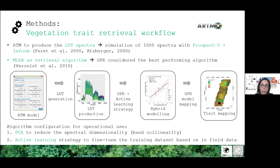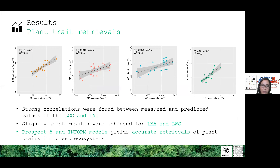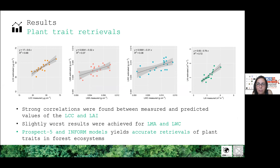We applied this workflow to estimate the four parameters mentioned at the beginning: leaf chlorophyll content, leaf mass area, leaf water content, and LAI. Scatter plots between the measured data and the estimates obtained from the PRISMA-like data are shown, and strong correlations were found between measured and predicted values of chlorophyll and LAI.